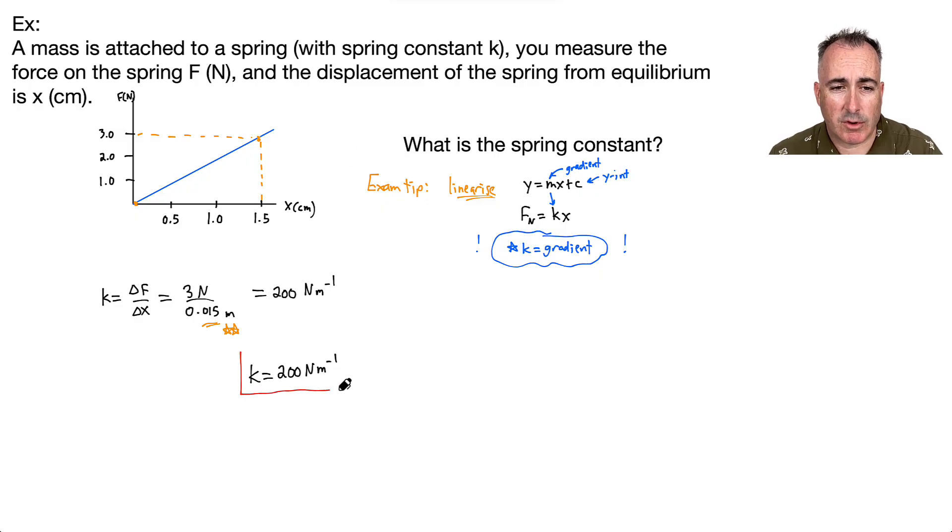So the key here, the thing I wanted you to learn was this trick about linearizing, this idea that if you see a graph, and it's a straight-line graph, you can use this idea that whatever's in front of the X is going to be the gradient, and whatever's sitting by itself is going to be the Y-intercept. That's it.